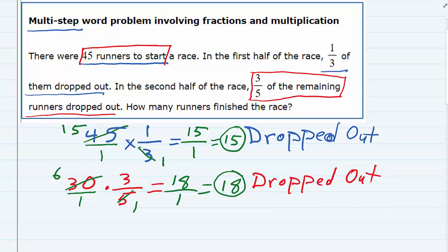So we started off with 45. In the first half of the race, we lost 15, and in the second half of the race, we lost another 18. So we are now left with 12 runners finishing the race.